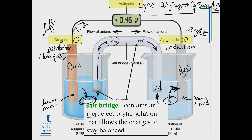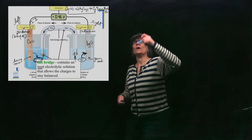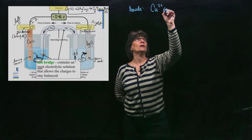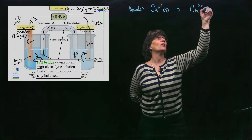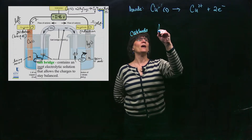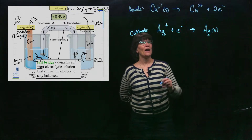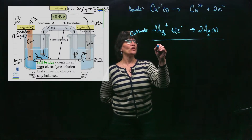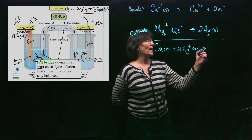Let's write the half reactions at both electrodes. At the anode: Cu(s) → Cu²⁺ + 2e⁻. At the cathode: 2Ag⁺ + 2e⁻ → 2Ag(s). The number of electrons gained and lost must be equal before adding the half reactions together, which is why the original overall reaction has two silvers — two electrons are transferred in this reaction.